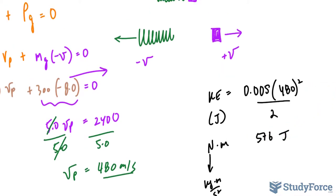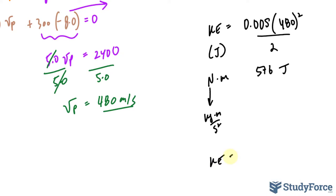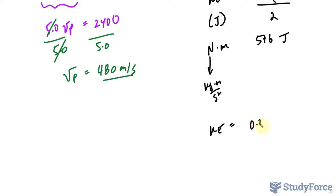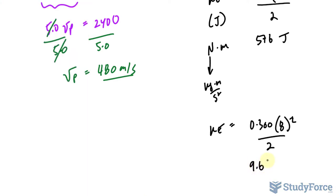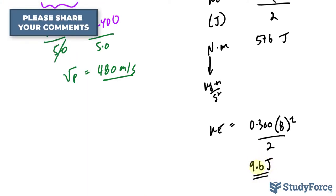We'll do the same thing for the gun. So kinetic energy is 0.300 and the speed was 8 raised to the power of 2 over 2. Using our calculator, 0.300 times 8 to the power of 2 divided by 2 makes 9.6 joules. So the gun had this much energy, 9.6 joules, and this bullet had that much energy.